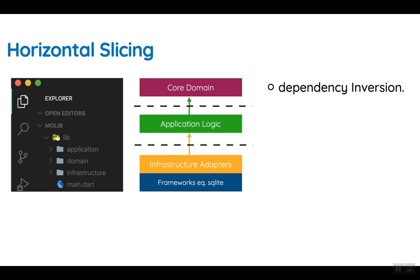Using the dependency inversion principle means that high-level modules should not depend on low-level details. Your core domain should be pure and everything else should depend on your core domain. The dependency flows from the domain outward in a circular sense. In this project structure, as you see from the example, there is an application layer, a domain layer, and an infrastructure layer, and the dependencies between those layers are managed using the dependency inversion principle.